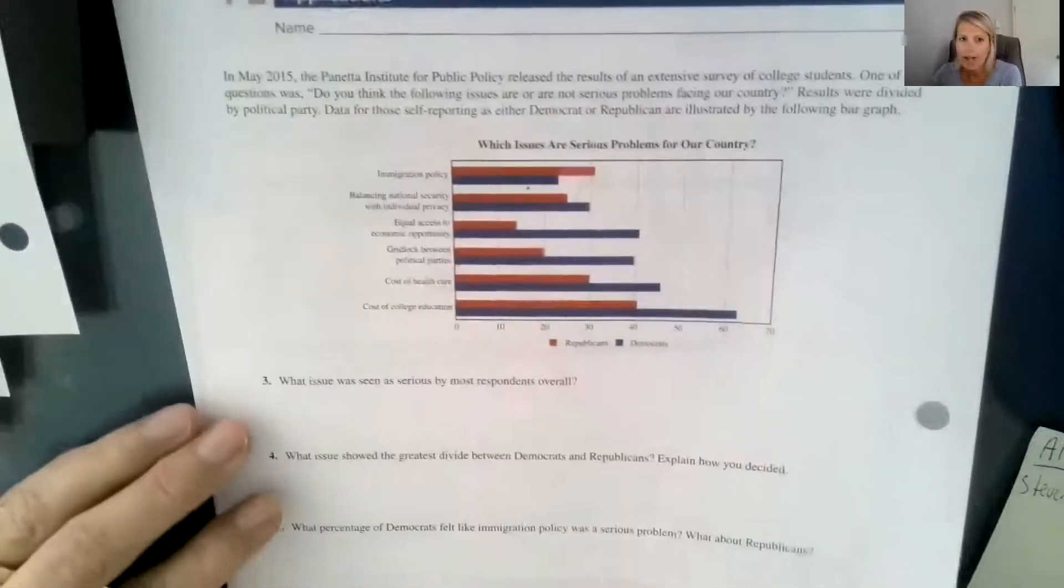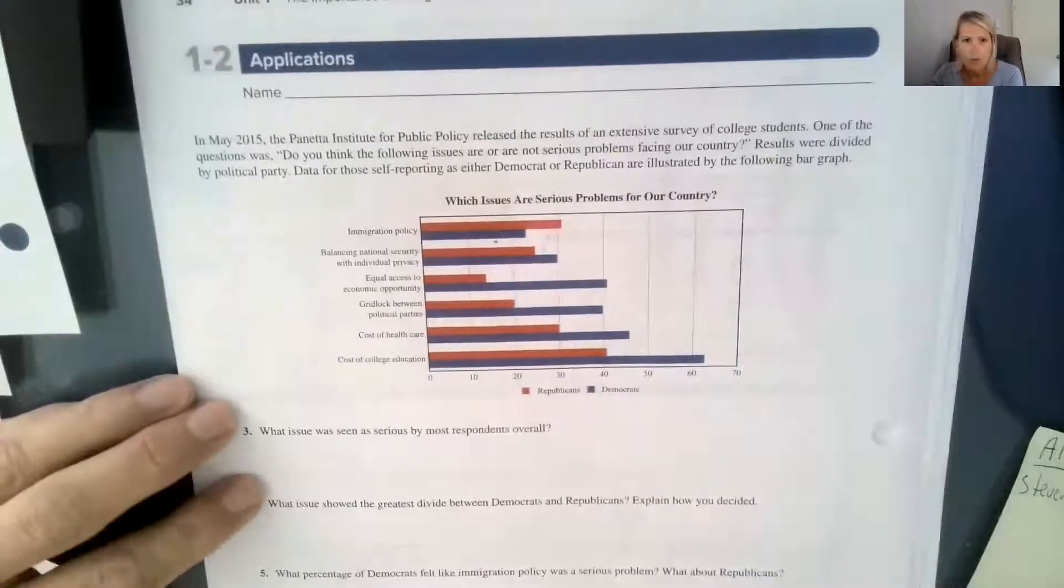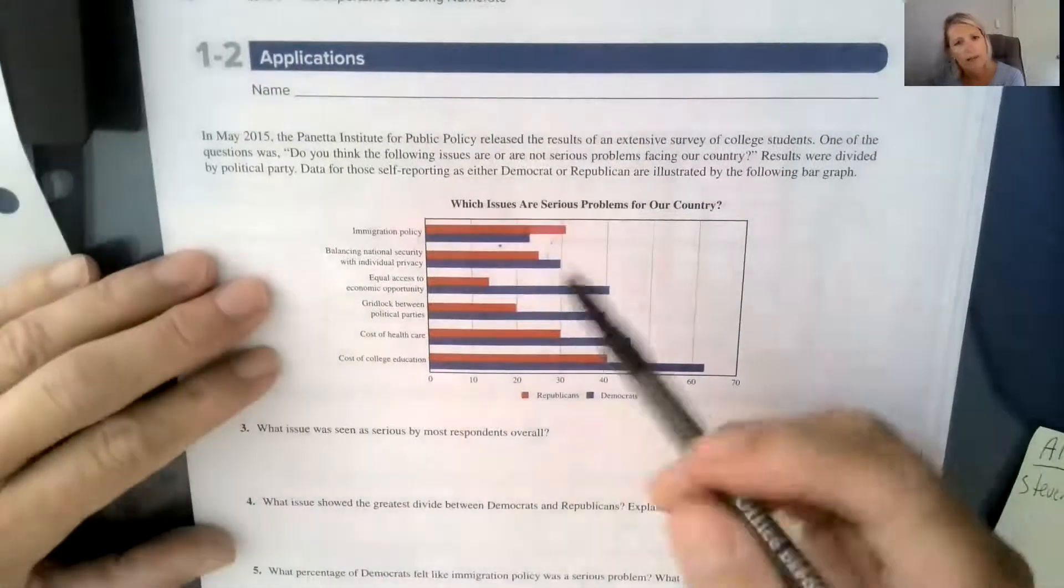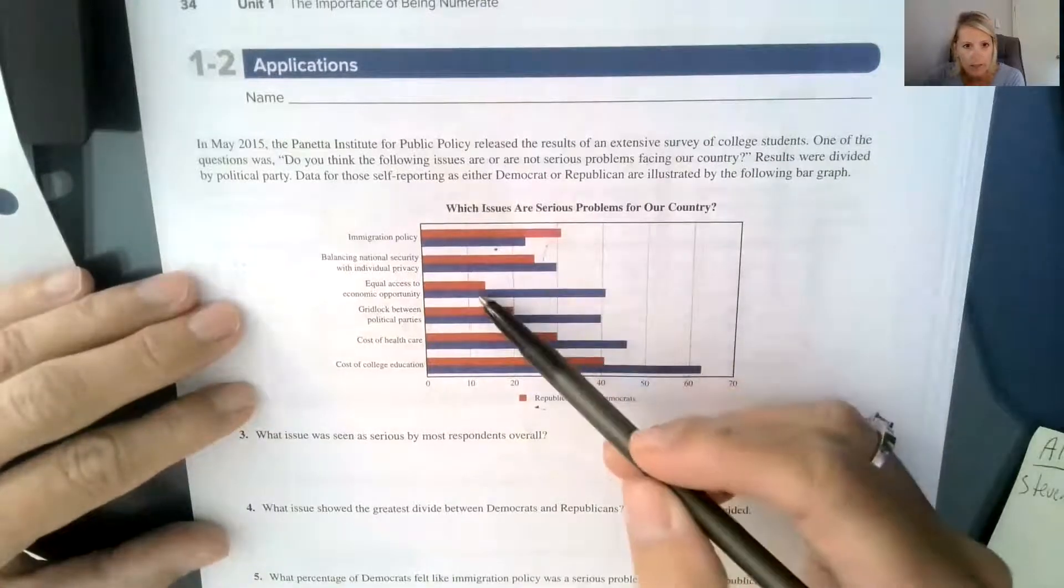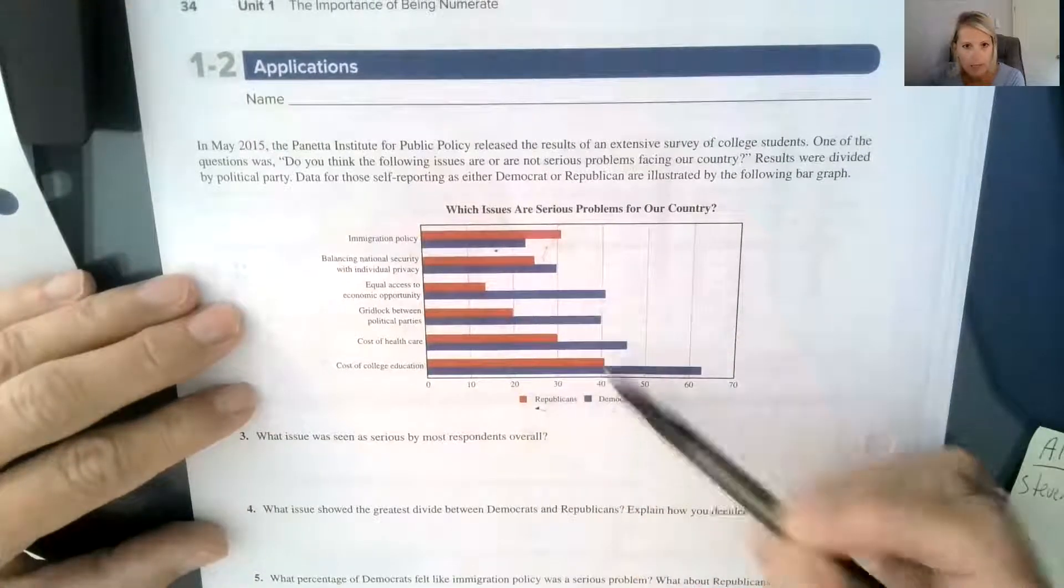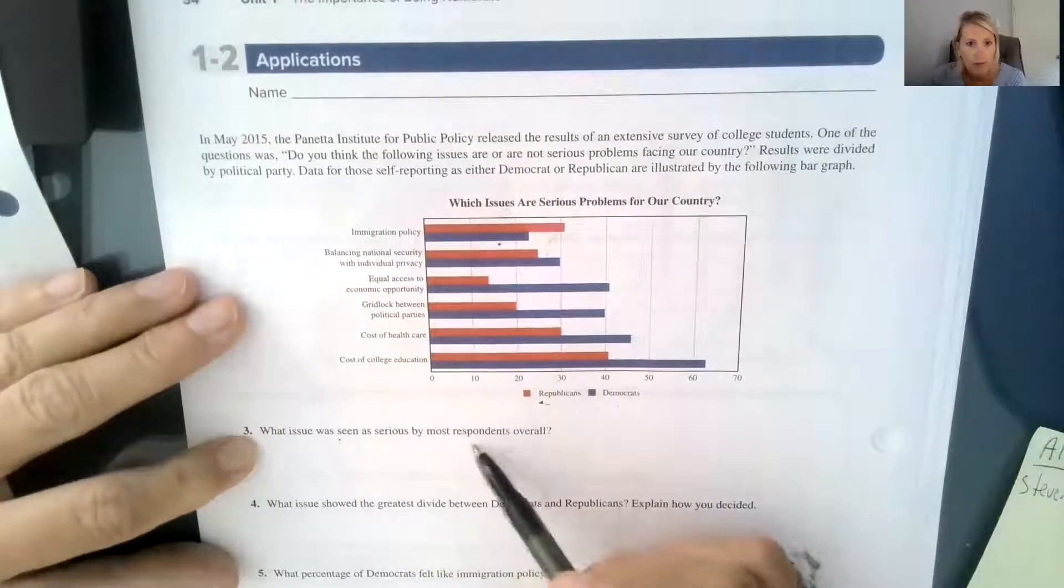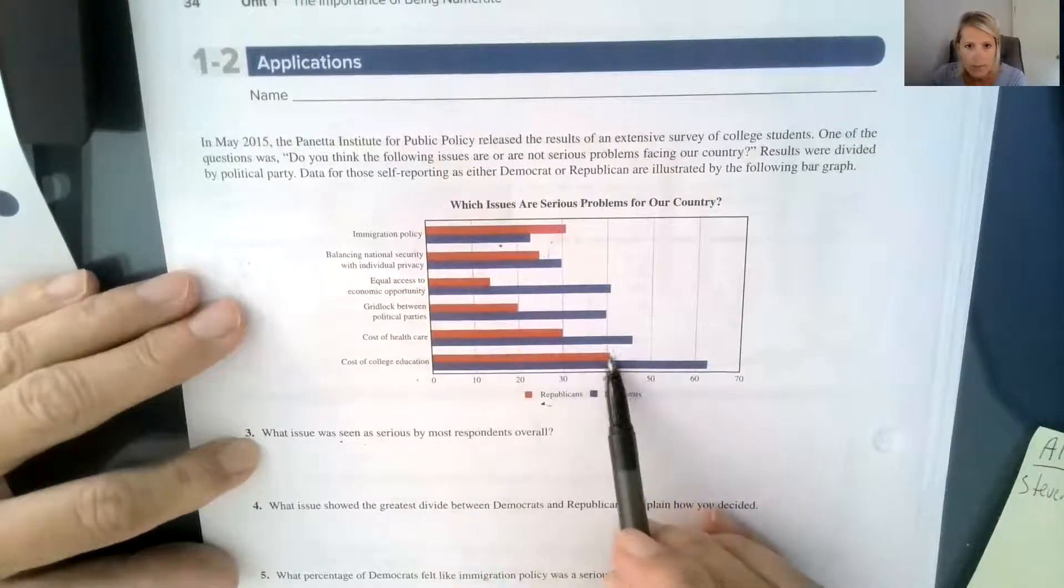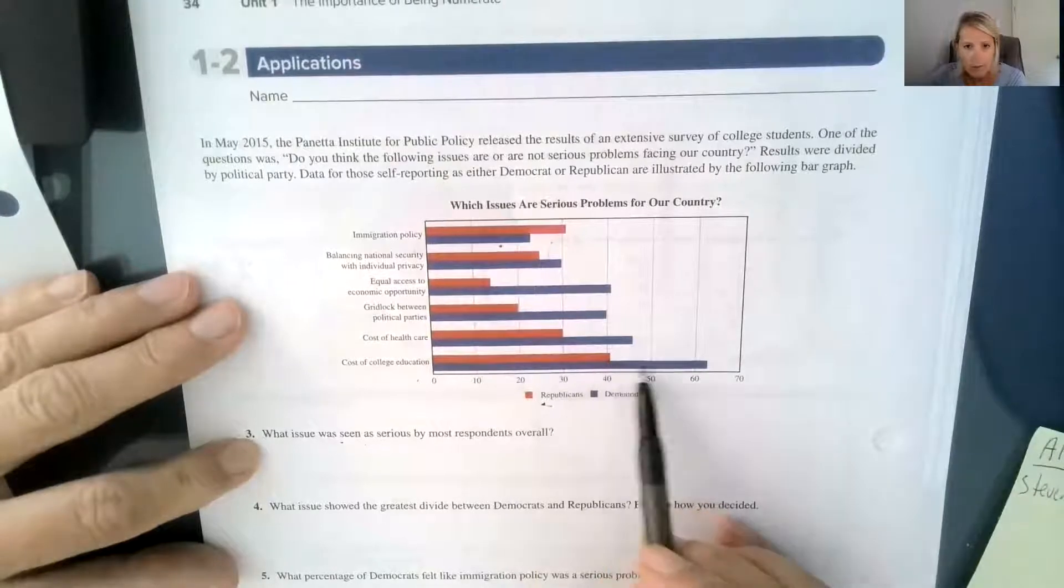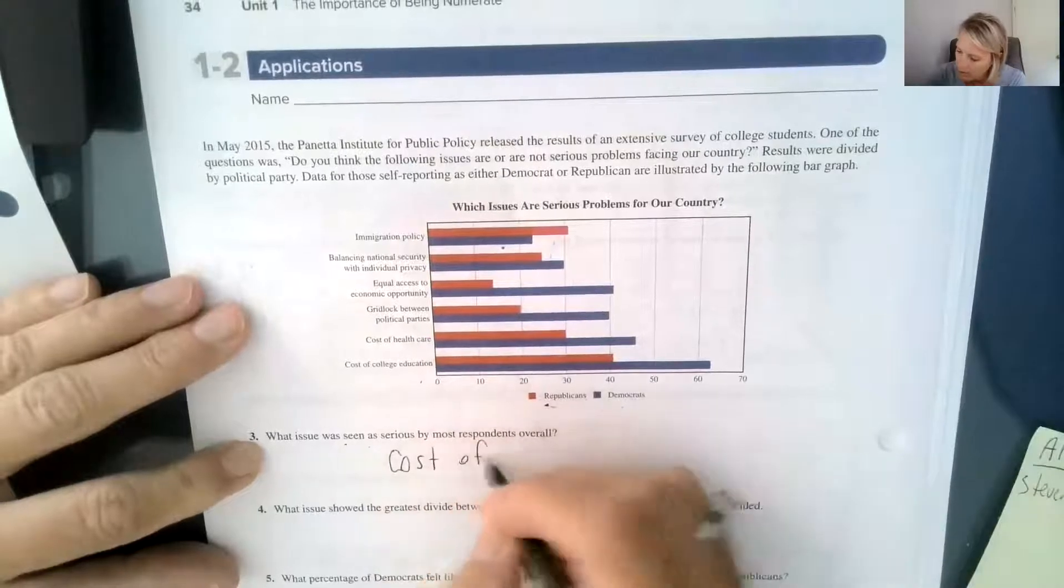And then the last grouping of problems here that we were having you look at for 1.2 was which issues are serious problems for our country. And so the people that said that they were Republican answered in the reds and the people that said they were Democrats answered in the blues. It says what issue was seen as serious by most respondents overall. So I would say it looks like cost of college education seems to be the highest for the Republicans and the highest for the Democrats. So cost of education, cost of college education.